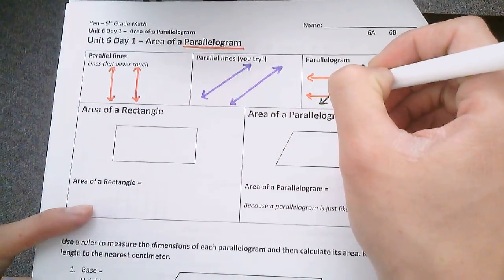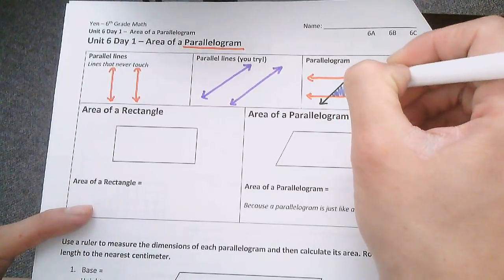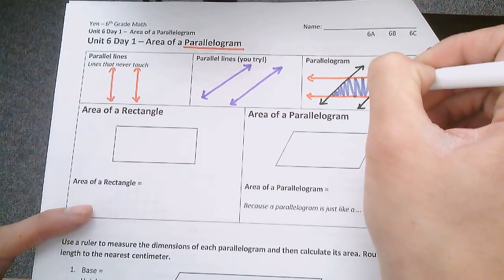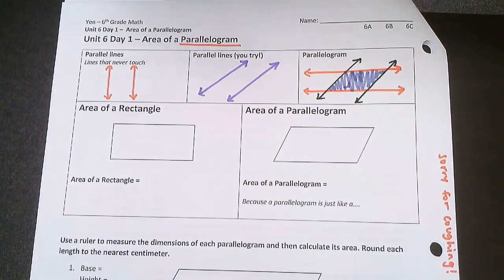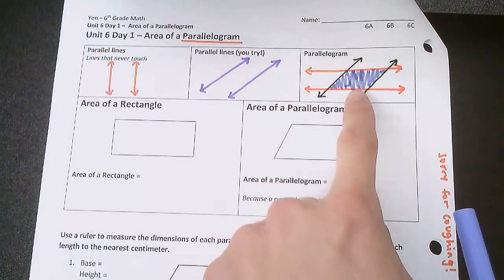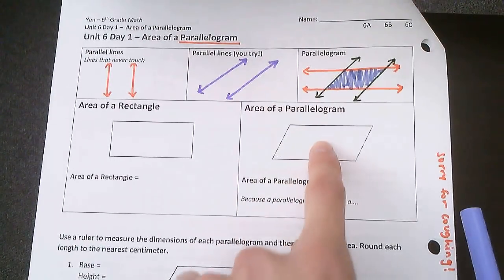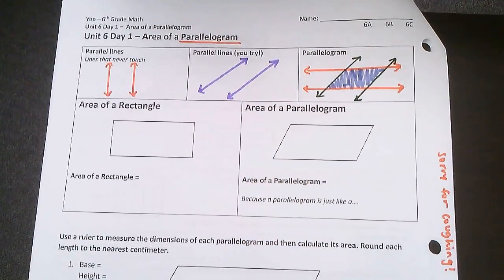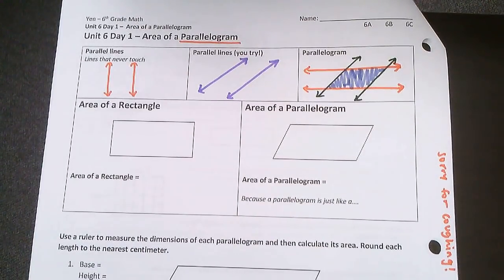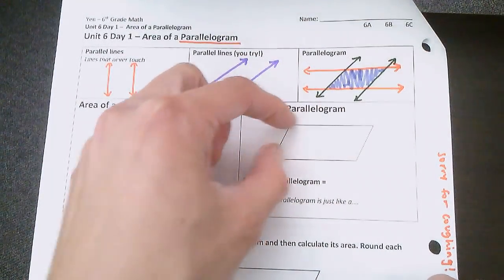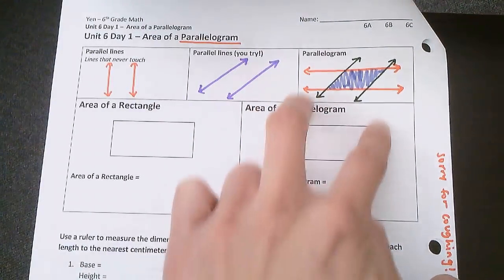And all of this area inside here, the shape that you make from this, that's your parallelogram. So notice how this shape kind of looks like this shape. So now we know what a parallelogram is. It's a shape with two sets of parallel lines.